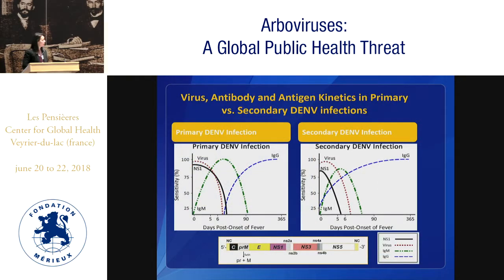The other complication is the fact that you see different kinetics as far as virus, antibody, and antigen tests based on primary and secondary infections. In primary infections, you'll see that dengue virus NS1 can be detected anywhere between 10 to 14 days post-onset of illness. This is just a cartoon depicting what you typically see in the kinetics of either a primary or secondary dengue virus infection. However, NS1 then becomes truncated in its ability to be detected due to immune complexes that form, related to the incredible anamnestic response of IgG observed in secondary infections.